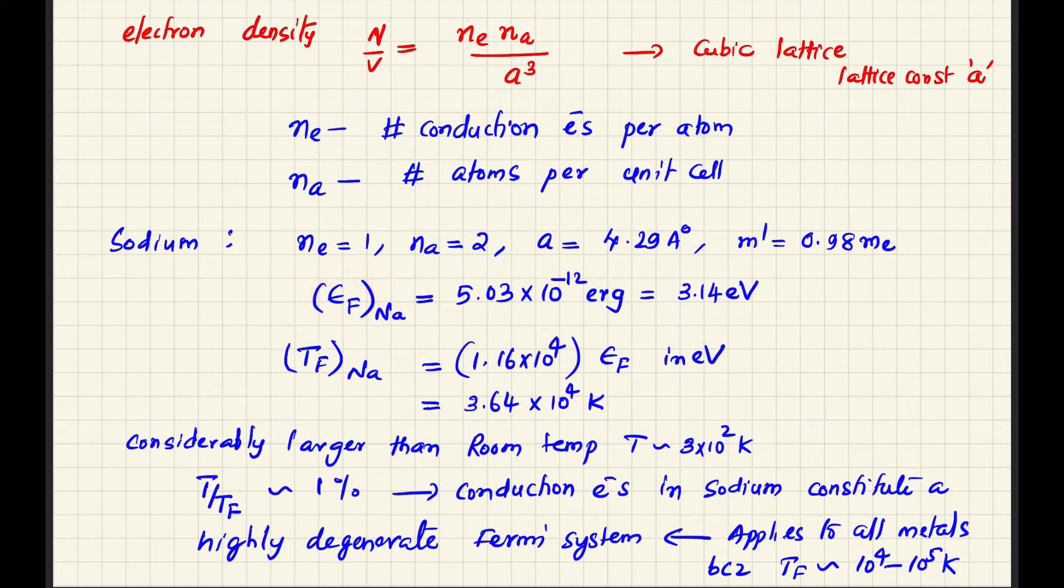Calculate Fermi temperature. The Fermi temperature is 3.64 times 10^4 K. Compared to room temperature, it is a very high value. The ratio T by T_F for room temperature shows that conduction electrons in sodium constitute a highly degenerate Fermi gas. This statement applies to all metals because all metals have Fermi temperature between 10^4 to 10^5 Kelvin.